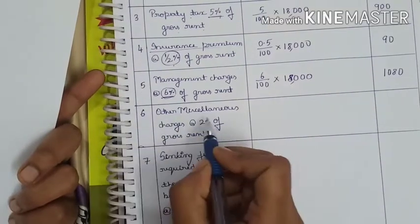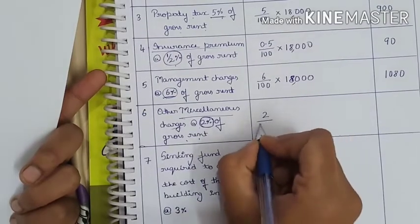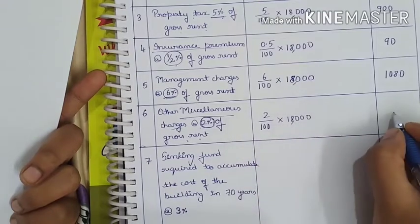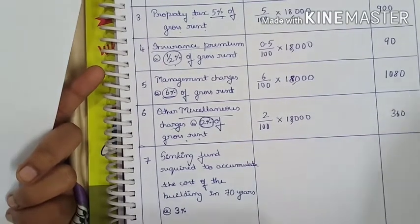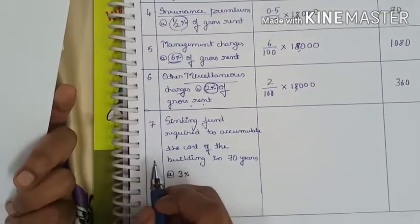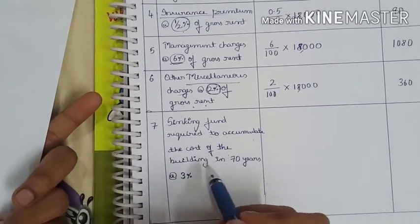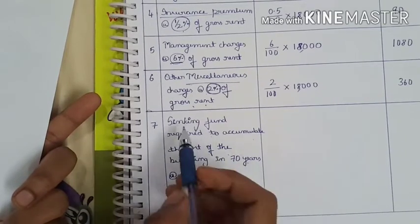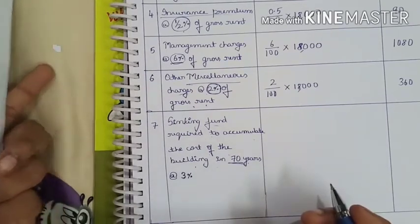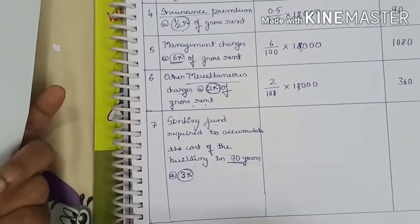Another item is miscellaneous charges, assumed at 2% of gross rent: 2 divided by 100 into 18,000 equals 360. The seventh item is the sinking fund required to accumulate the cost of the building in 70 years. We will calculate the sinking fund at the rate of 3%. We will assume the construction cost as 150 per square meter.